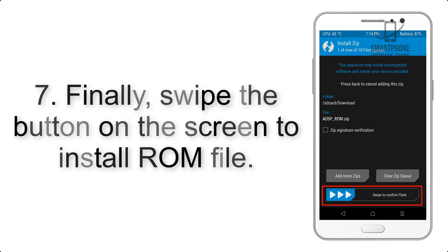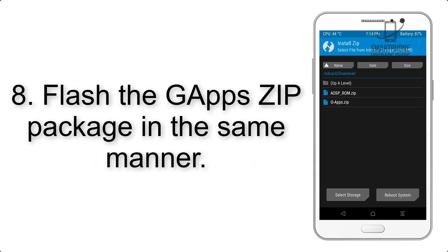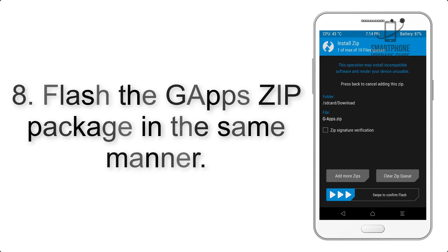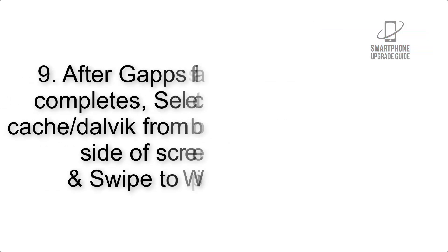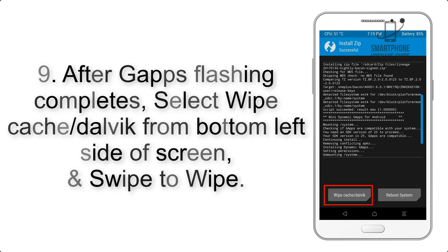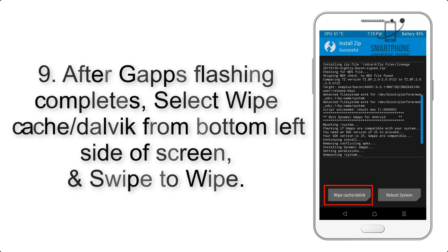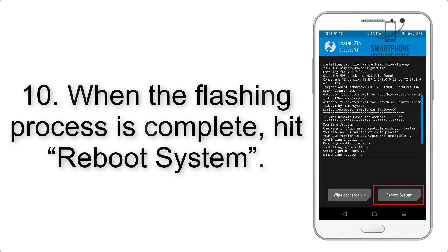Step 7: swipe the button on the screen to install the ROM file. Step 8: flash the GApps zip package in the same manner. Step 9: after GApps flashing completes, select Wipe Cache and Dalvik from the bottom left side of the screen and swipe to wipe.